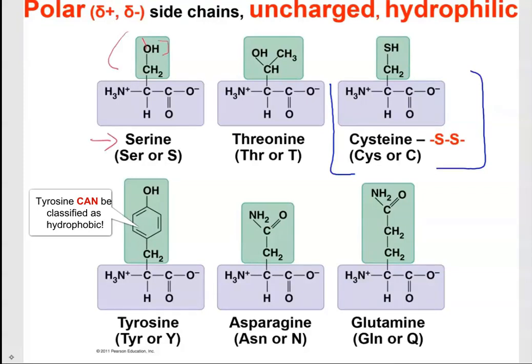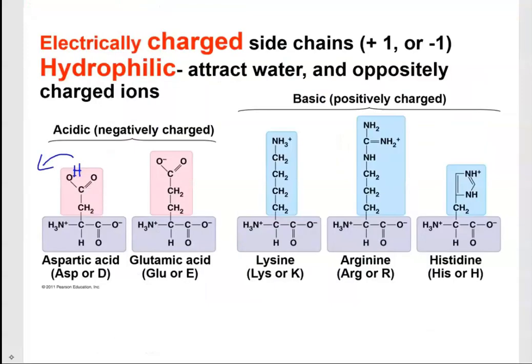An example of a hydrophilic amino acid would be serine, colored in green. It has an oxygen — specifically a hydroxyl group — which makes it hydrophilic. Some amino acids are acidic because they have the ability to drop off a hydrogen, and basic ones can pick up hydrogen from the environment, gaining a charge. You don't need to memorize every amino acid; you should be able to look at one and identify why it would be acidic, hydrophilic, or hydrophobic.